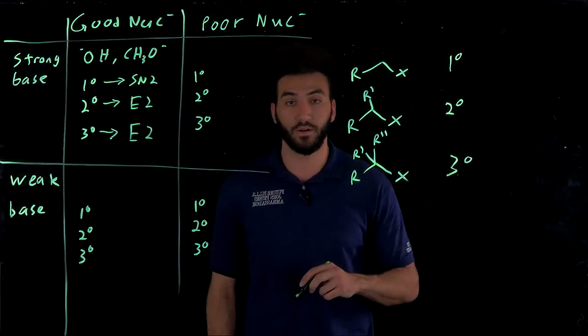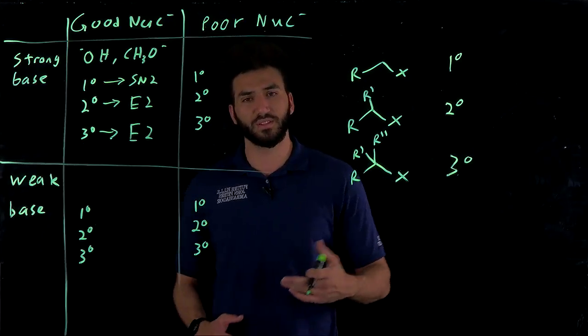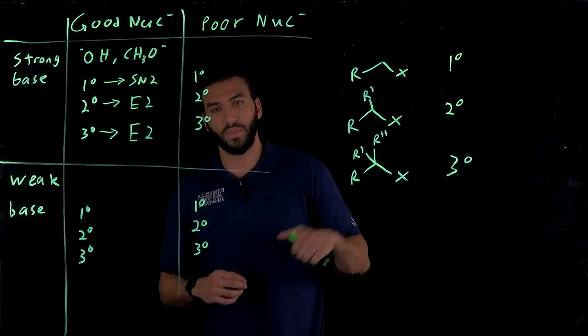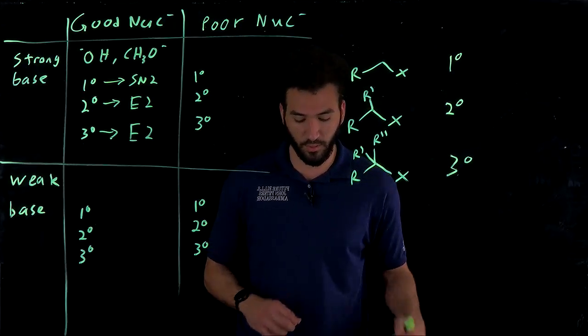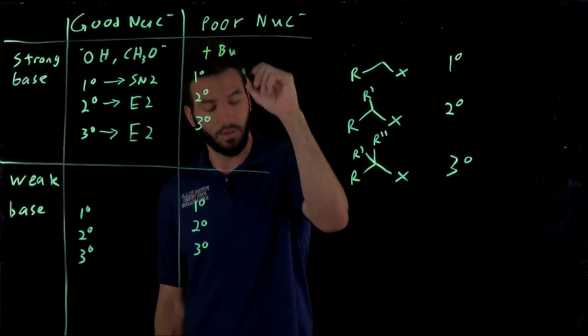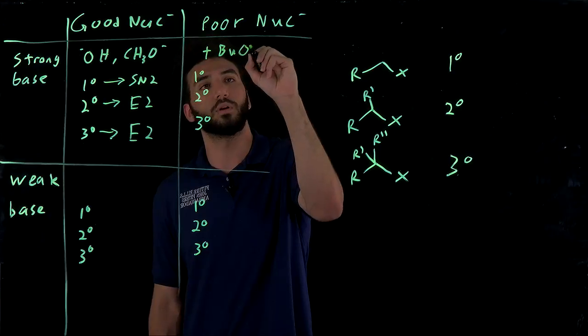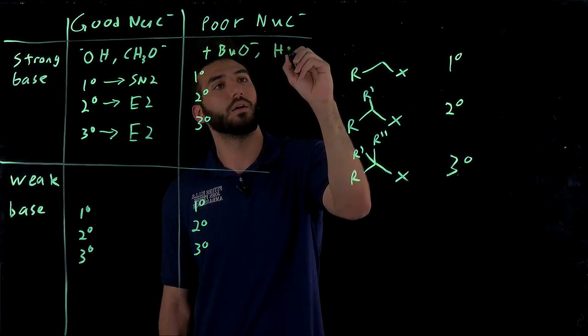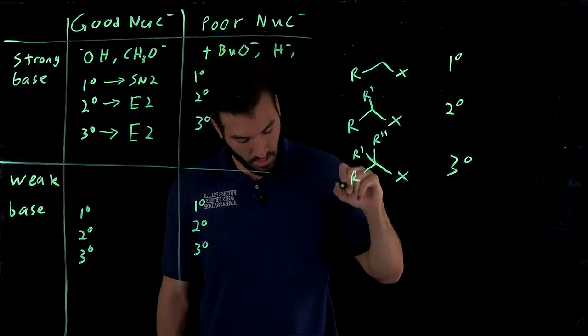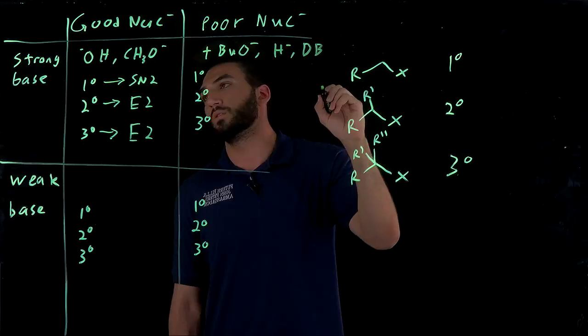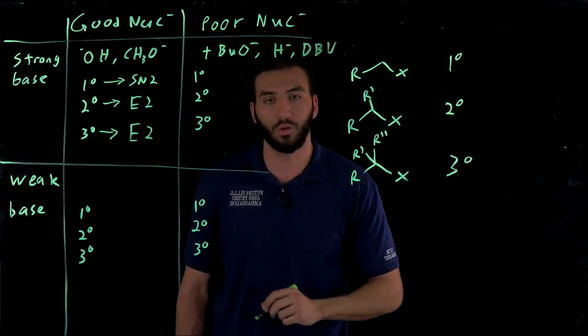So poor nucleophiles that are also strong bases, think about things that are kind of bulky, things that don't really want to add on to places. So things like TBU, tert-butoxide is what I'm writing up, if you guys want to know what these things stand for. And a hydride and DBU. These are all good bases, however, they are weak nucleophiles.